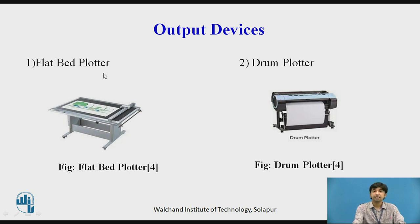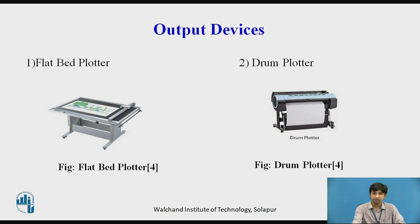In a flatbed plotter, we have a table on which a sheet of paper is fixed. A set of pens is mounted on a carriage and can move in both the X and Y directions, while the paper remains fixed. For example, to make an A4-size drawing, we fix an A4 sheet on the plotter. For moving the pens in the X direction, we have an X drive motor.